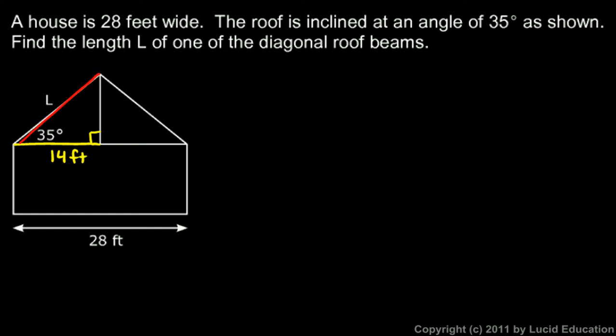What trig function do we use? Here's our right triangle, we have an angle, and we're dealing with the adjacent side and the hypotenuse, so the cosine function comes to mind. The cosine of 35 degrees will be 14 feet divided by L. Rearranging that equation algebraically to solve for L, L will be 14 feet divided by the cosine of 35 degrees, and the calculator tells us that's 17.1 feet.